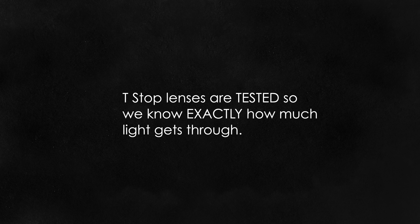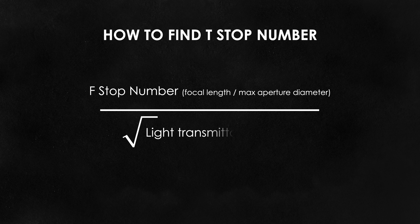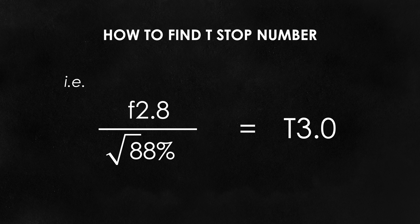On the other hand, a T-stop number is precise. If you have two lenses with a T-stop of T2.8, they're going to let in the same amount of light — because these lenses are tested to determine how much light actually makes it through to hit the camera sensor. The T-stop number is then calculated by dividing the lens's F-stop number by the square root of the light transmittance. The T in T-stop actually stands for transmission.